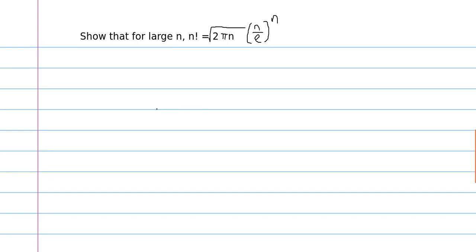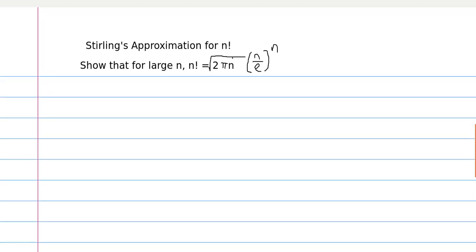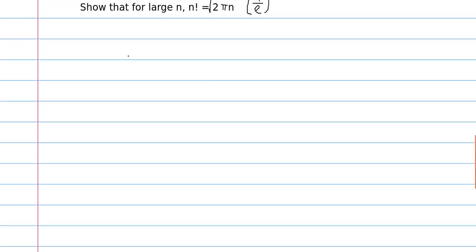Hello everybody, today in this video we are going to prove Stirling's approximation. Stirling's approximation is an approximation for the factorial of n, and it states that for a large n, n factorial is equal to the square root of 2 pi n times n over e to the n power. This is a pretty complicated formula, but in fact we can just prove this using the gamma function.